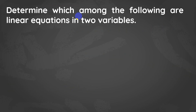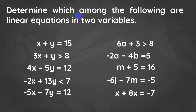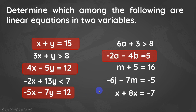Let's have a short activity about linear equations in two variables. Determine which among the following are linear equations in two variables. You can pause this video and list them down. The answers are: x plus y equals 15, 4x minus 5y equals 12, negative 5x minus 7y equals 12, negative 2a minus 4b with equal symbol, and negative 6j minus 7m equals negative 5 — all have two variables and an equal symbol.